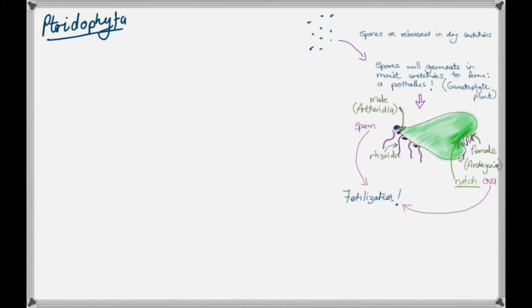For fertilization to take place, the sperm has to make its way to the ova for those two nuclei to fuse, and water is so important for this to happen because the sperm has to swim to the ova for this fertilization to take place. This is why this plant particularly is heavily reliant on water for fertilization.